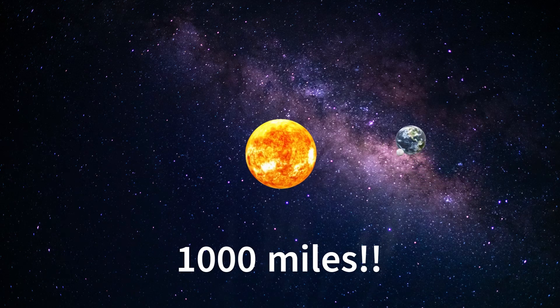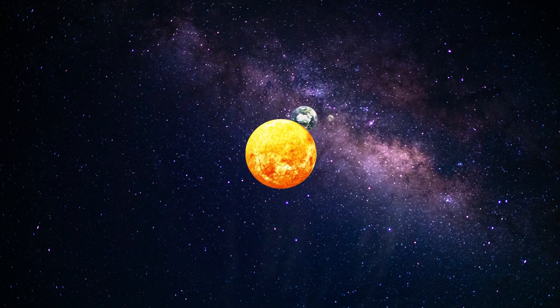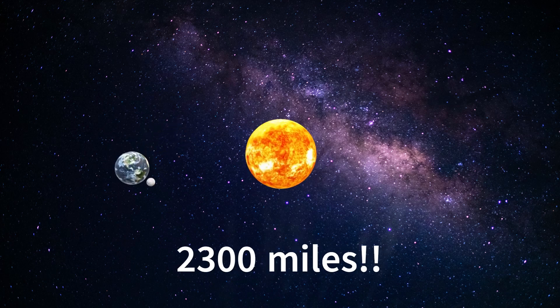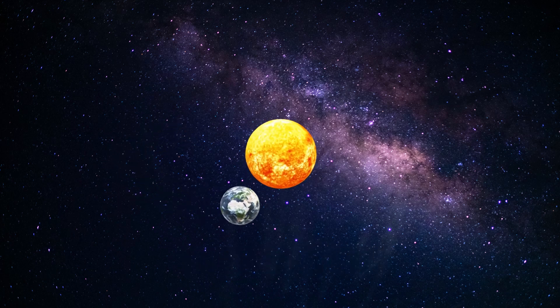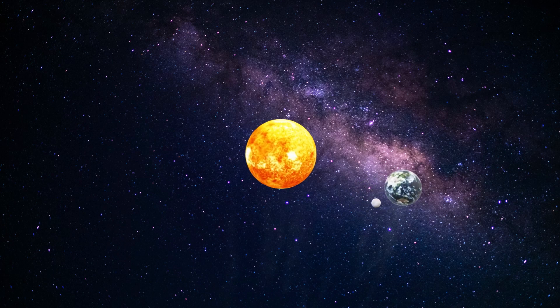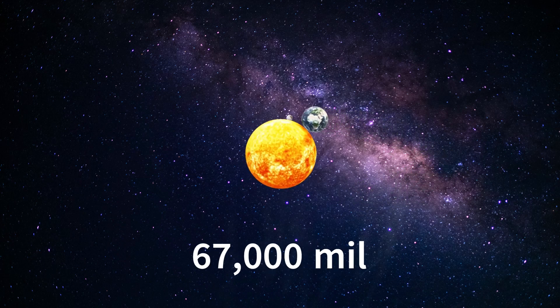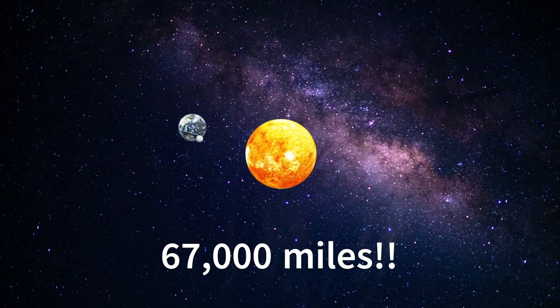Earth rotates at 1,000 miles per hour. The moon orbits the Earth at an average speed of 2,300 miles per hour. Earth and moon together orbit the sun at a speed of nearly 30 km per second, or 67,000 miles per hour.